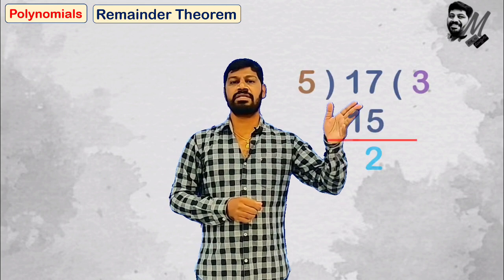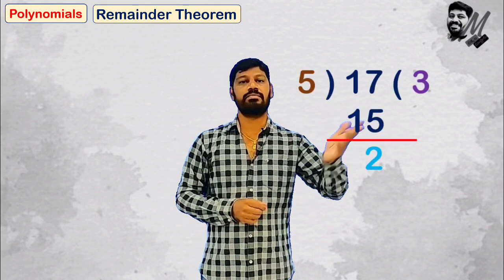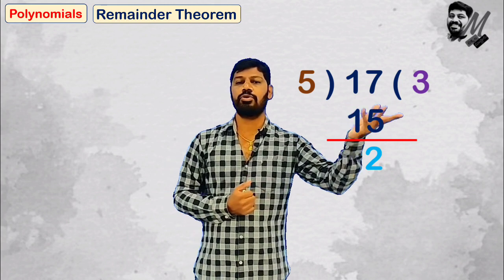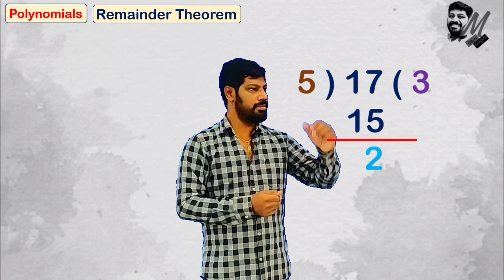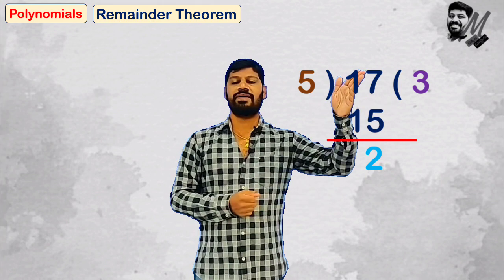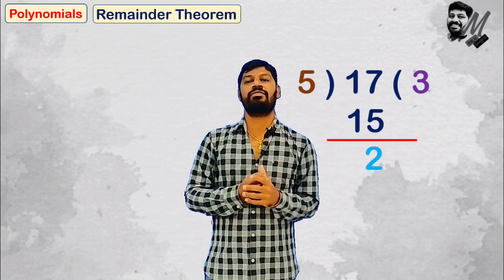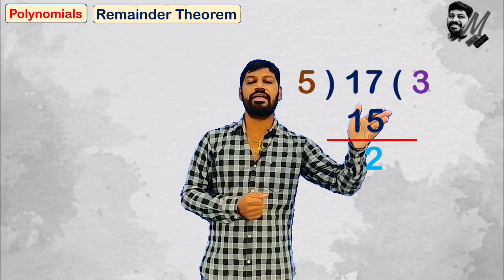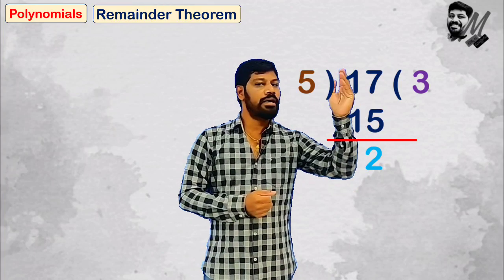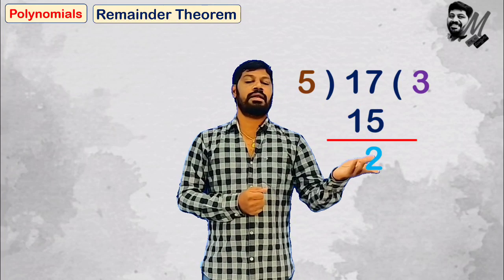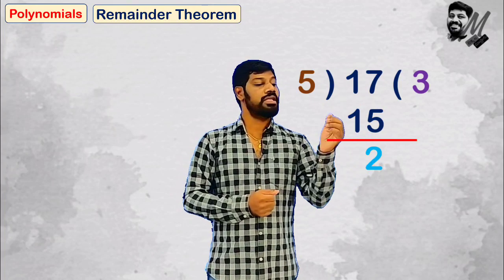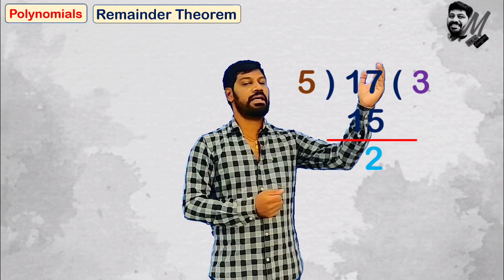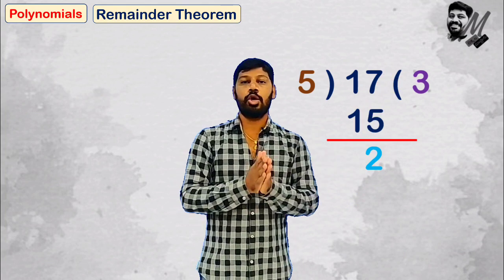In general, we have divisions with numbers. For example, suppose 17 divided by 5: 5 times 3 is 15, subtract — the remainder is 2. The remainder is 2.